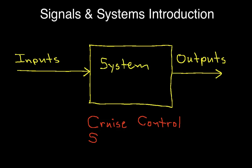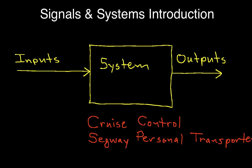Another example is a Segway Personal Transporter. In this case, the system would be the Segway. The input would be the position of someone's body on the Segway — by leaning forward you make it move forward, by leaning backward you make it back up or stop. The output would be the speed at which it's moving. In addition to making everything move, the Segway also balances on two wheels, making it a pretty complicated system.